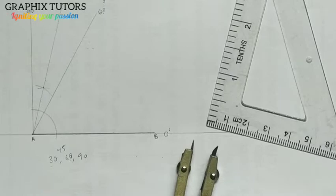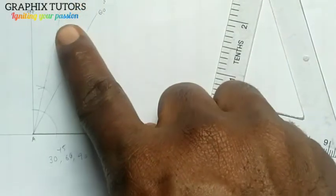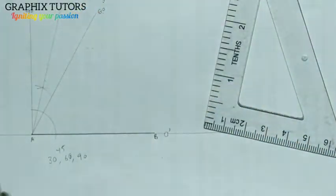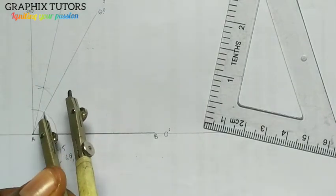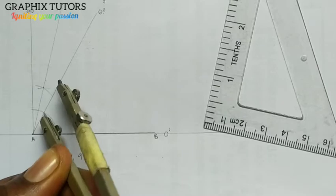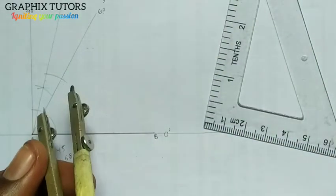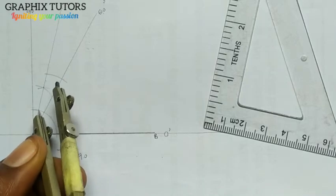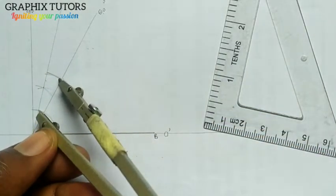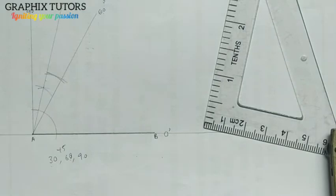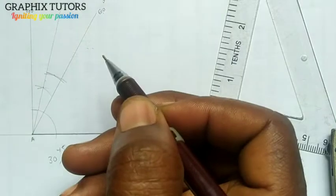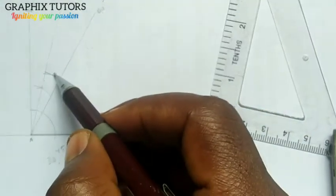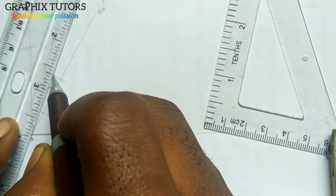We already have an arc that is cutting all these lines, so you don't have to draw any other arc. We know it falls in between 60 and 75. I'll place my compass at the point where it bisects the line of 60 and strike an arc. I'll place it at the point where it bisects the line of 75 and strike another arc. The point of intersection is at this point here.